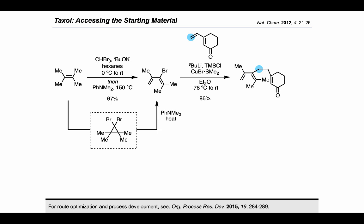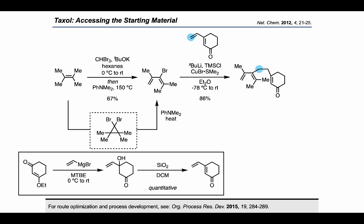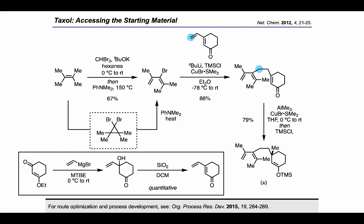In the 1,6-addition, nucleophilic attack occurred at the carbon marked in blue using the electrophile shown. That electrophile was accessed by a Grignard addition of vinyl magnesium bromide to a protected 1,3-diketone, which could then be treated with silica to provide the desired dienone.